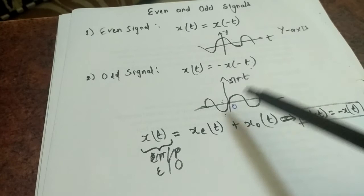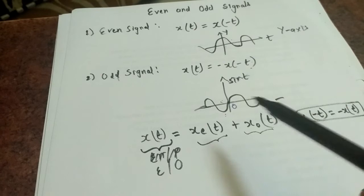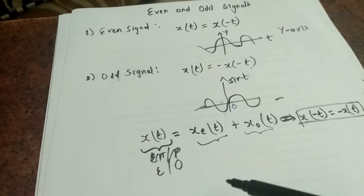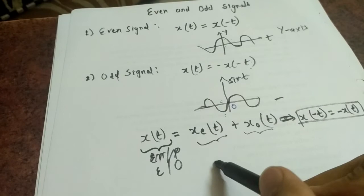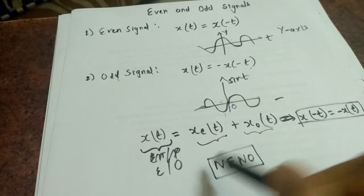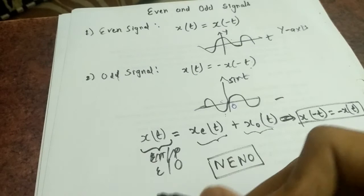Any signal x(t) can be decomposed into two forms: an even part and an odd part. If you ask whether a general signal x(t) is even or odd, the answer is that it is neither even nor odd — we call it a 'nano' signal, meaning neither even nor odd.